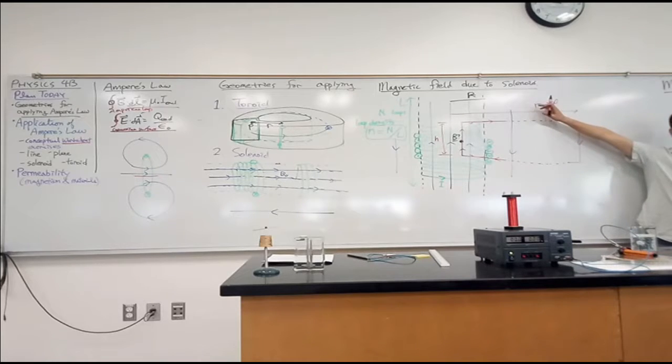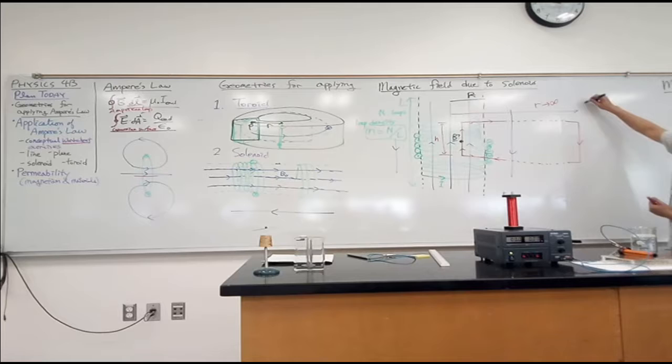And letting this R go to infinity is far enough for a particular criterion. And that particular criterion is at this point here where it's arbitrarily far away from the solenoid, I can say my magnetic field here is actually zero. Or as R goes to infinity, magnetic field goes to zero. How do I know that?